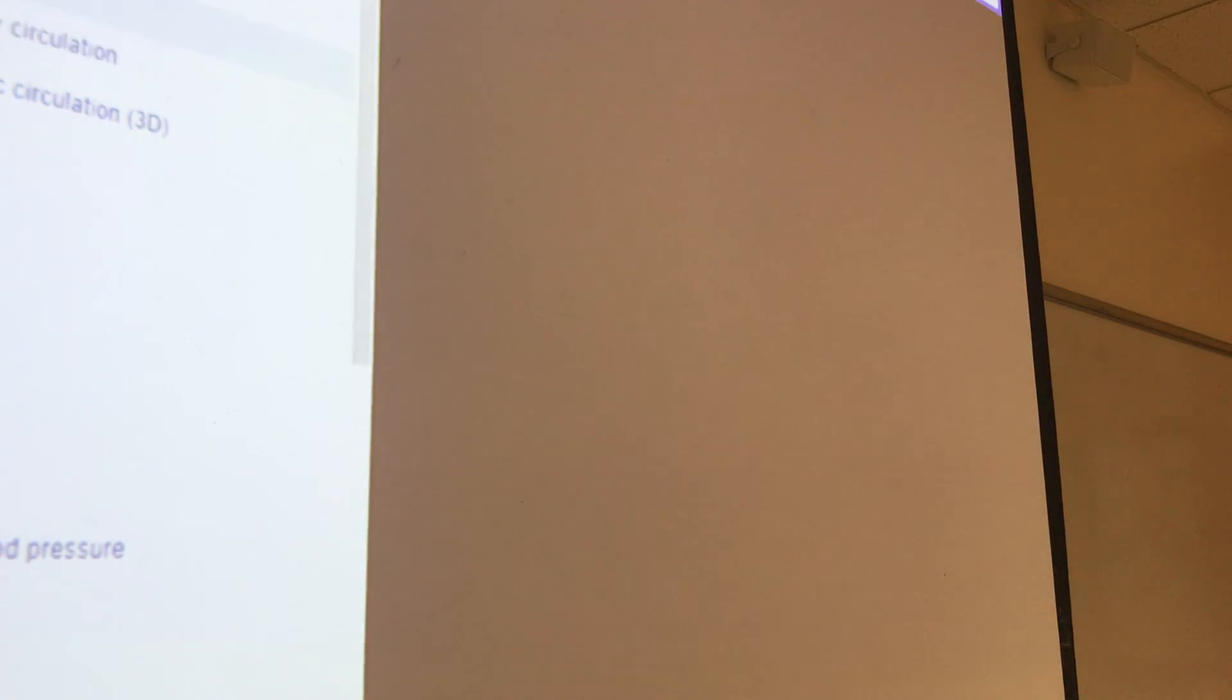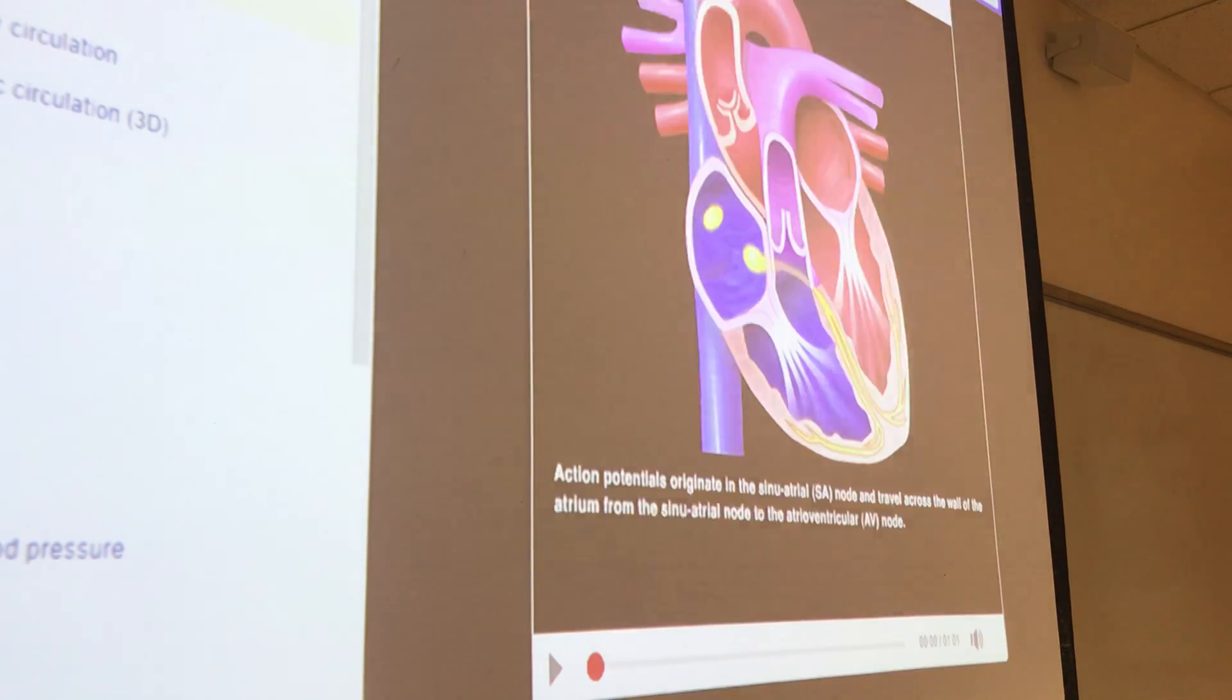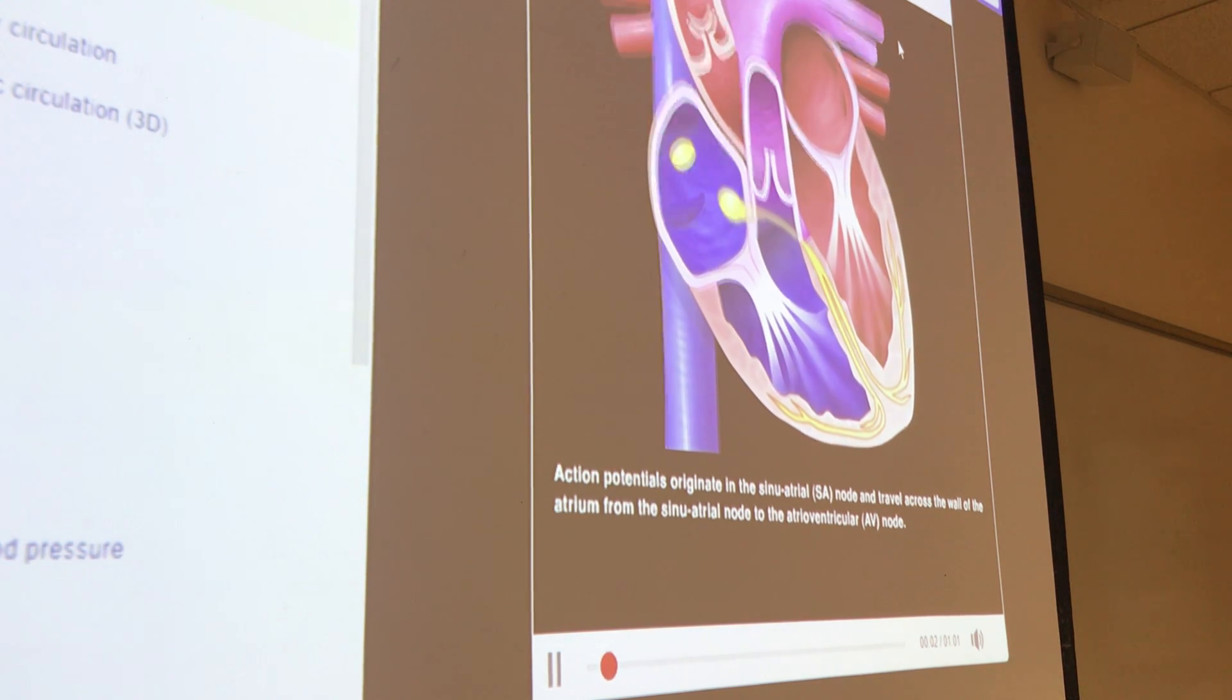Let me just show you the cardiac conduction system here. What I want you to realize is just how fast it's really happening. We can discuss it, and by discussing it we kind of slow things down. But in reality, it is happening very fast. Action potentials originate in the sinoatrial SA node and travel across the wall of the atrium from the sinoatrial node to the atrioventricular AV node.